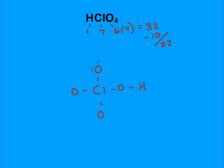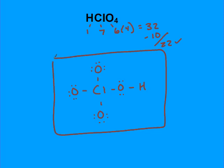If I add my lone pairs, that's 2, 4, 6, 8, 10, 12, 14, 16, 18, 20, 22, which is how many I have. So this is the structure for perchloric acid.